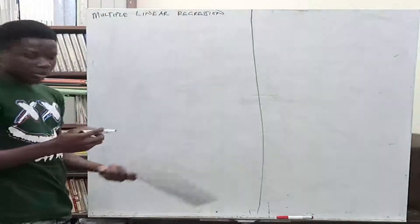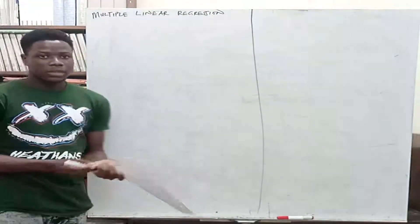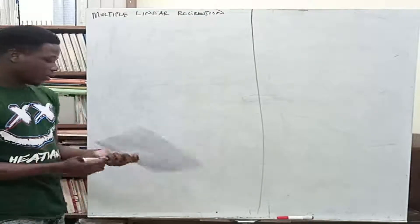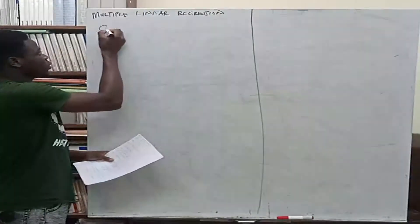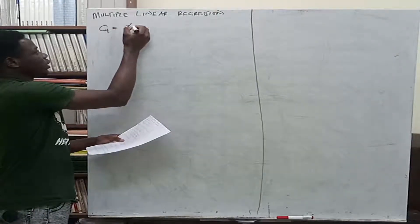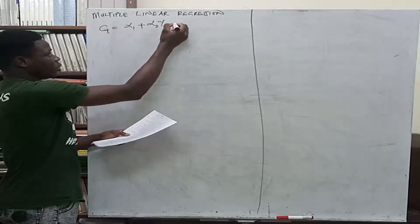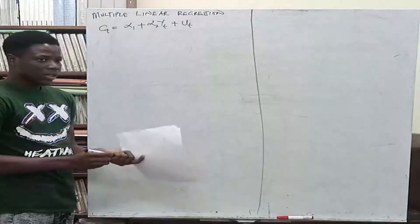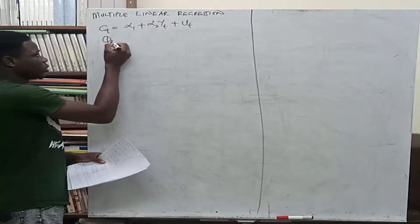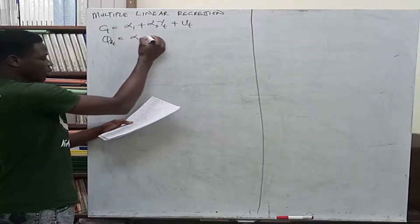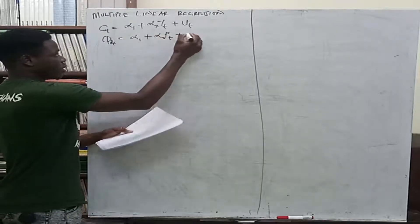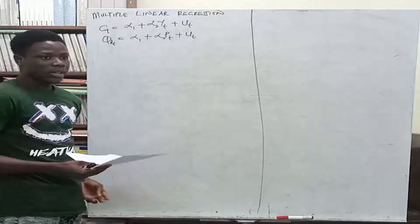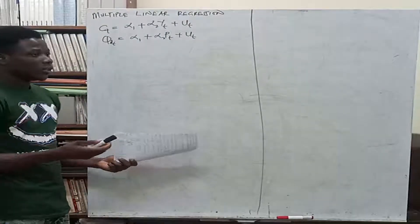In one of the earlier videos, we discussed the simple linear regression, where we have just one independent variable. For instance, in the consumption model, consumption depends on the income of the consumer. In the demand model, quantity demanded depends on the price of the commodity. These are examples of the simple linear regression. The u term is a random error term.